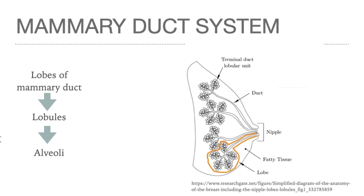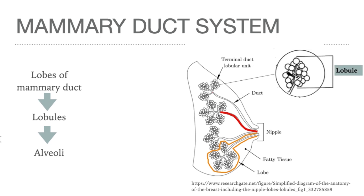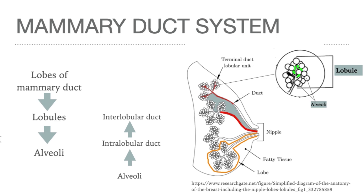There are about 15 to 25 lobes, each lobe having its own excretory duct, the lactiferous duct. Each lobe of the mammary gland has lobules, which consist of alveoli or acini. Intralobular loose connective tissue surrounds the larger ducts and the lobules. Milk is secreted by epithelial cells lining the alveoli and excreted into the intralobular ducts, then into the interlobular ducts that continue as the lactiferous duct opening up into the nipple.